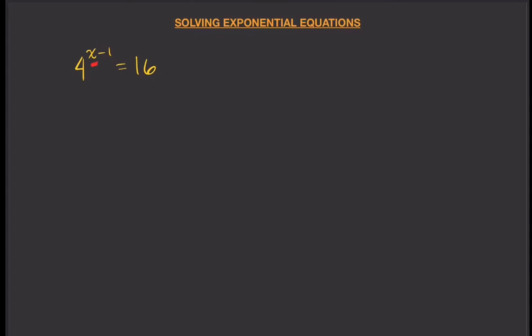For this example, we can just simply guess. But that's not what we want. We want a concise way of solving it — a legitimate solution, not just trying to guess numbers. So how do we do that? We need to use the one-to-one property of exponential equations.